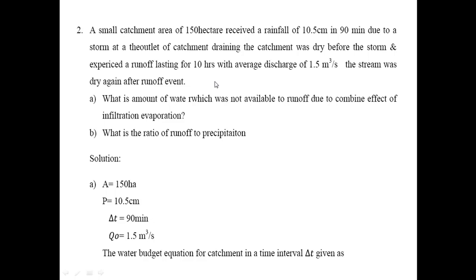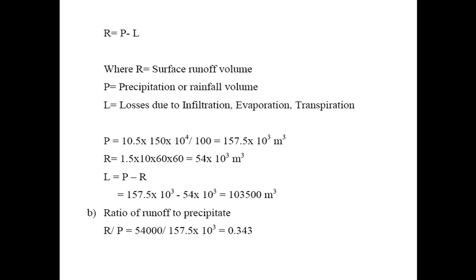In the solution, given data: area is 150 hectares, precipitation is 10.5 cm, delta t is 90 minutes, and outflow is 1.5 cubic meters per second. The water budget equation for a catchment area in a time interval delta t is R equals P minus L, where R is surface runoff volume, P is the precipitation rainfall volume, and L is the losses due to infiltration, evaporation, and transpiration. Total precipitation P equals 10.5 cm times 150 times 10 to the power 4 divided by 100.